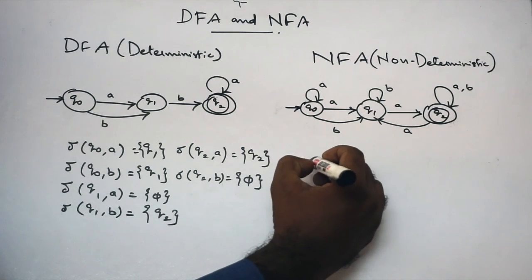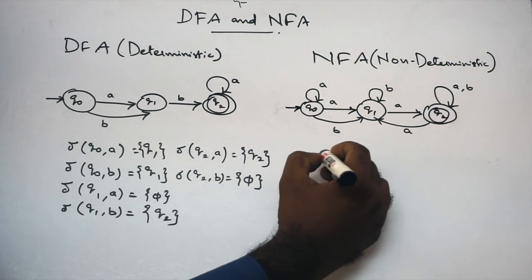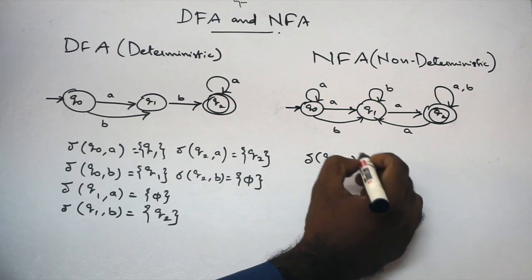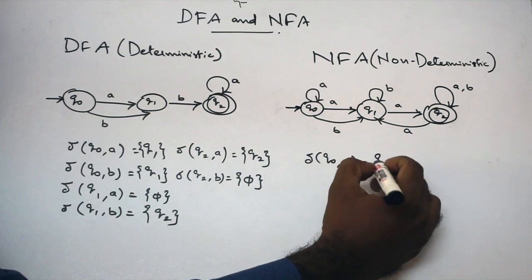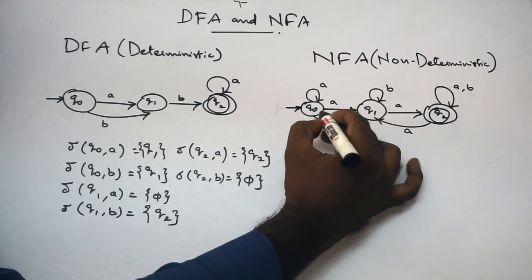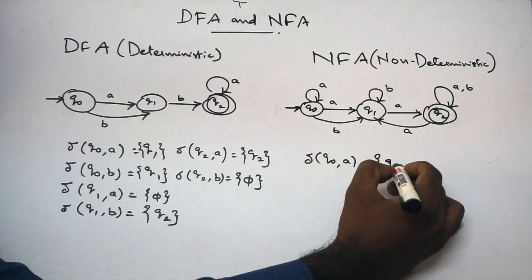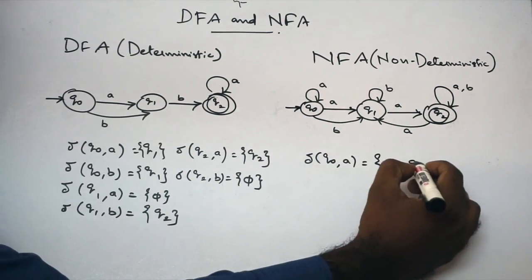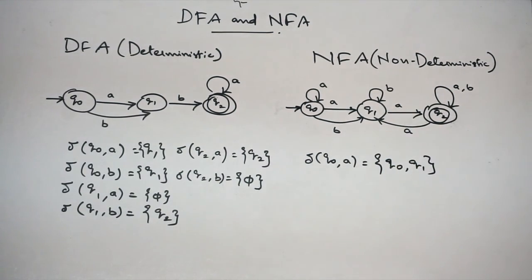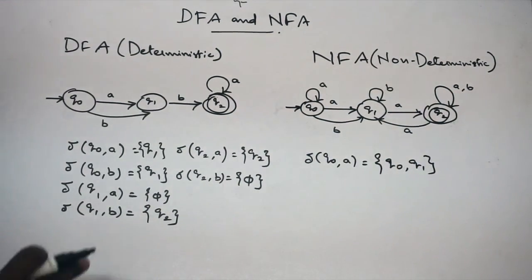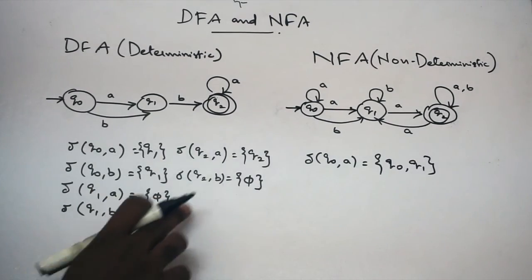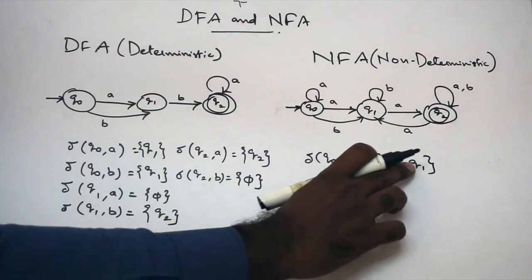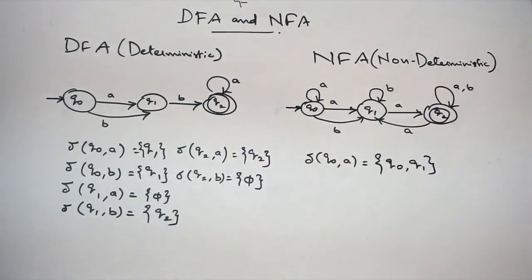So transition functions are different. What is the transition of Q2 on A? What is the transition of Q0 on A? What is the transition of Q1? Q0 comes from Q1. If you look at DFA, you can see one state for any state. But in NFA, there is more than one state — so this is the difference.